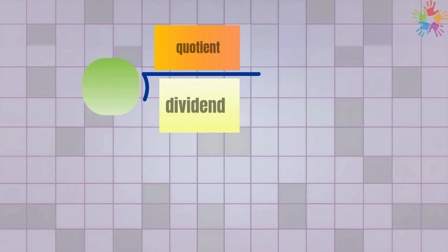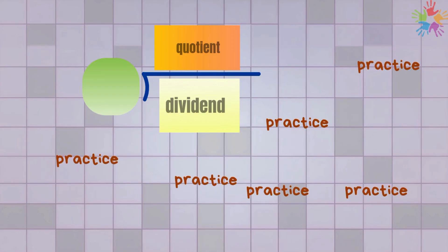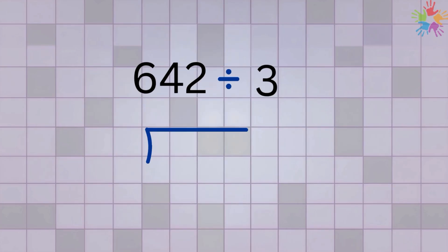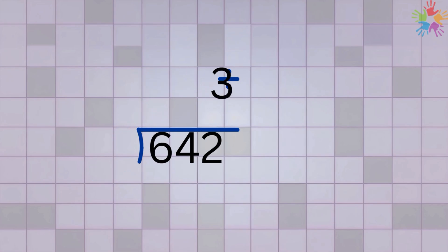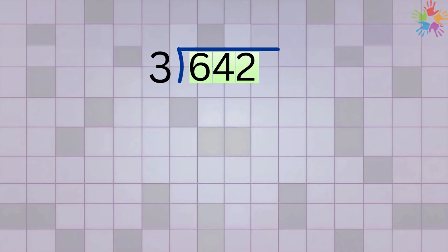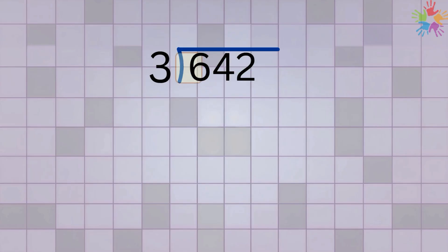As we solve, we write each digit of the quotient on top, right above the dividend. Here is our first example: we put 642 inside the long division symbol and place the 3 outside since it is the divisor. Since the dividend is too big, we can't divide all the digits at once — instead we go digit by digit.